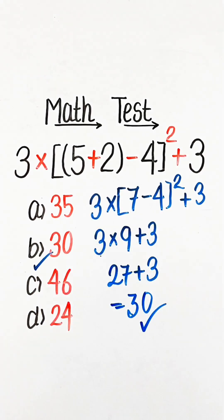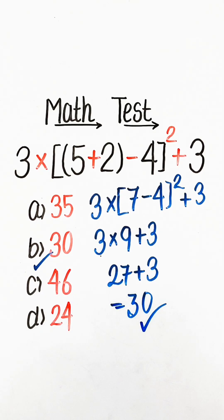3 nines are 27, plus 3 equals 30. So Option B, 30, will be the correct answer. If you like my video, please like, share, and subscribe to the channel.